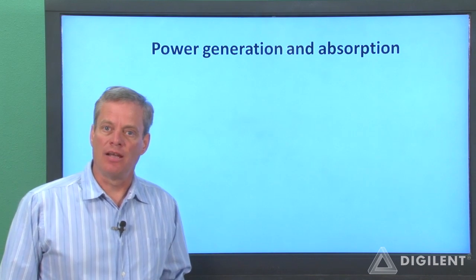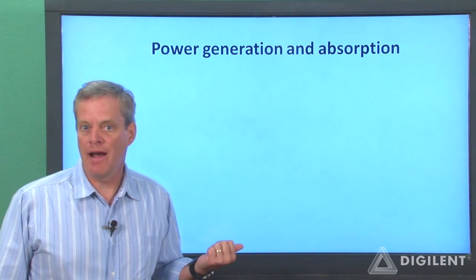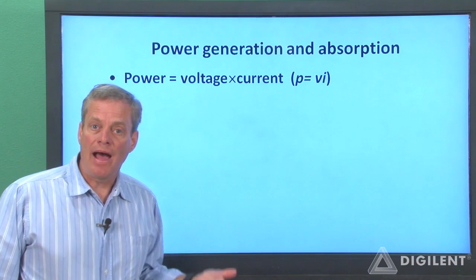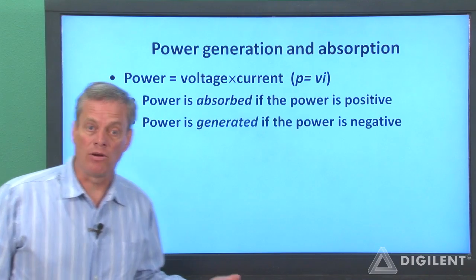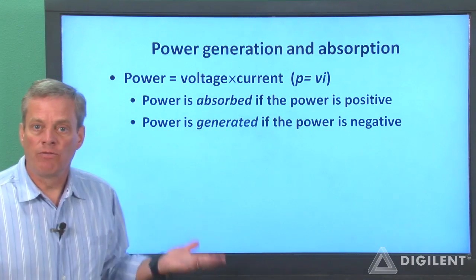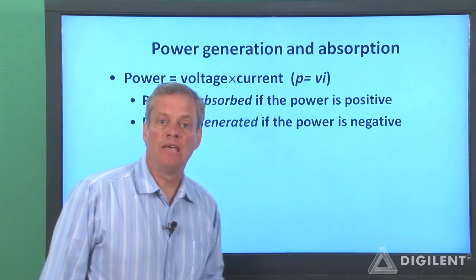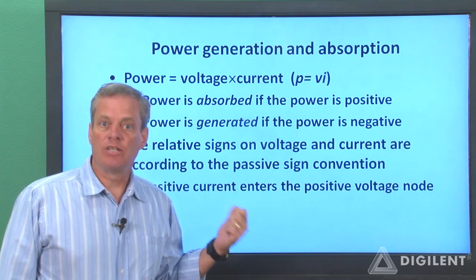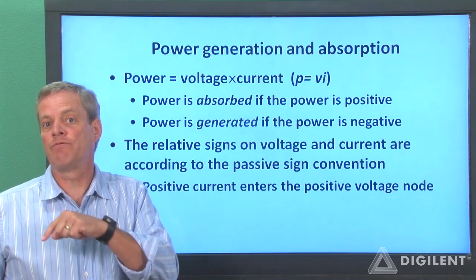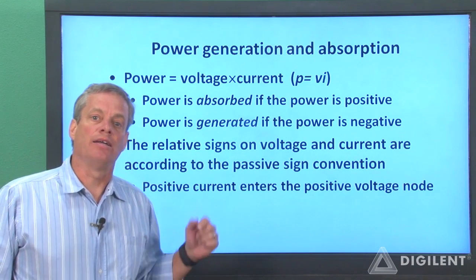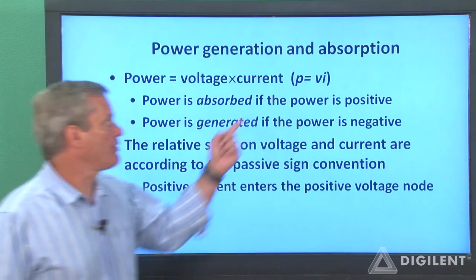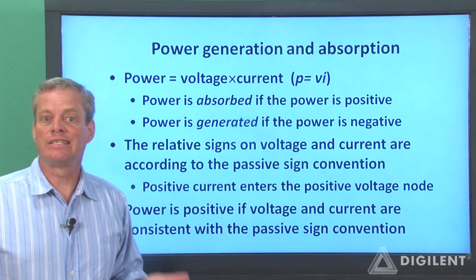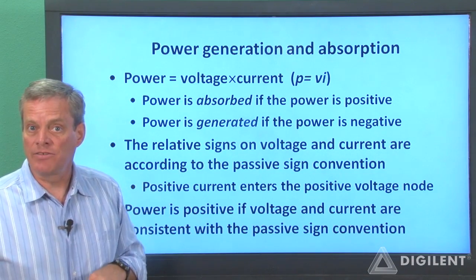Whenever we determine the power of a circuit element, we need to keep track of whether the element is absorbing or generating power. Electrical power is the product of voltage and current for a particular circuit element. The sign on the power indicates whether the element is absorbing or generating power. If the power is positive, the element is absorbing power — it's converting electrical energy to some other form. If the power is negative, the element is generating power — it's providing electrical energy to the circuit. We always use the passive sign convention to assign reference voltage polarity and current directions for each of our passive components. Power will be positive if the actual voltage and current are consistent with the passive sign convention. If they're opposite to the passive sign convention, power is negative.